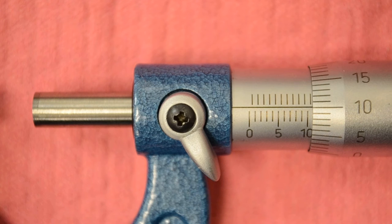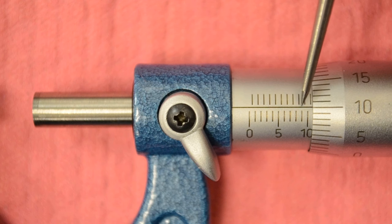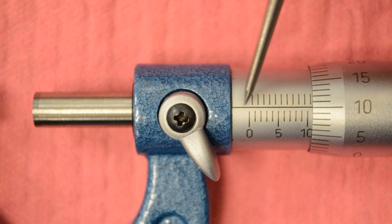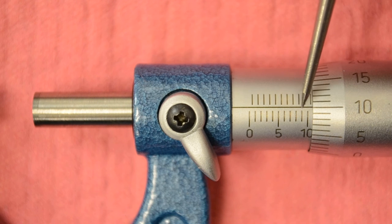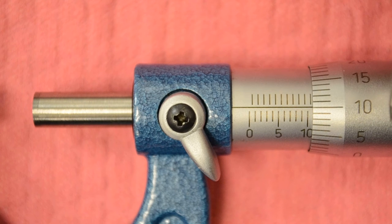And on the metric mic we have here in the center, this is our reference line or some people call it a datum line. So we're looking at the intersection between this line and the face of the thimble. This is the barrel or the sleeve and this is the thimble.